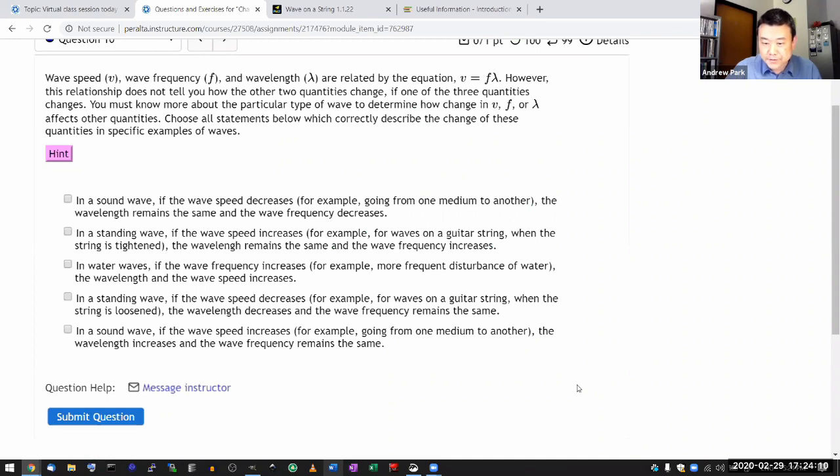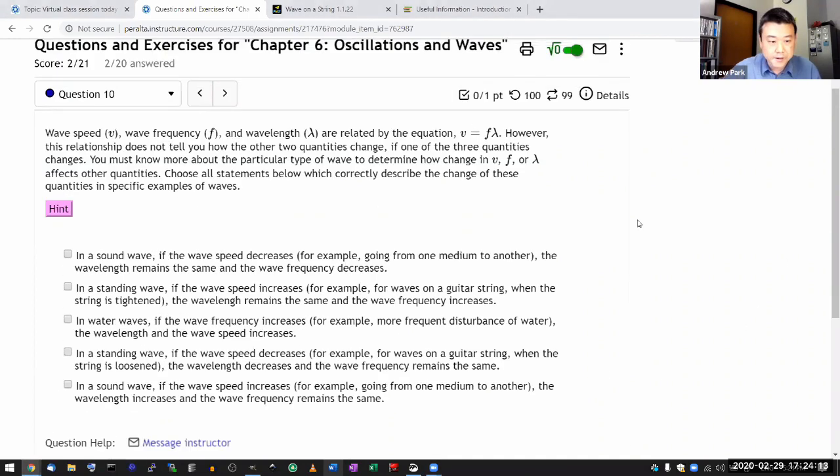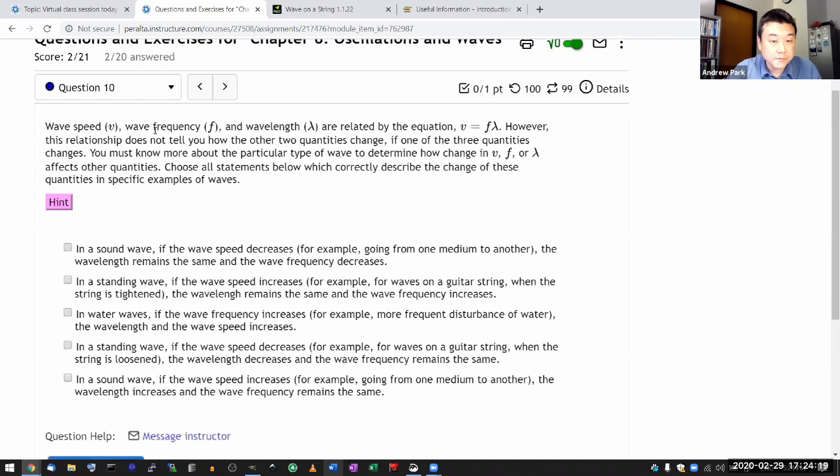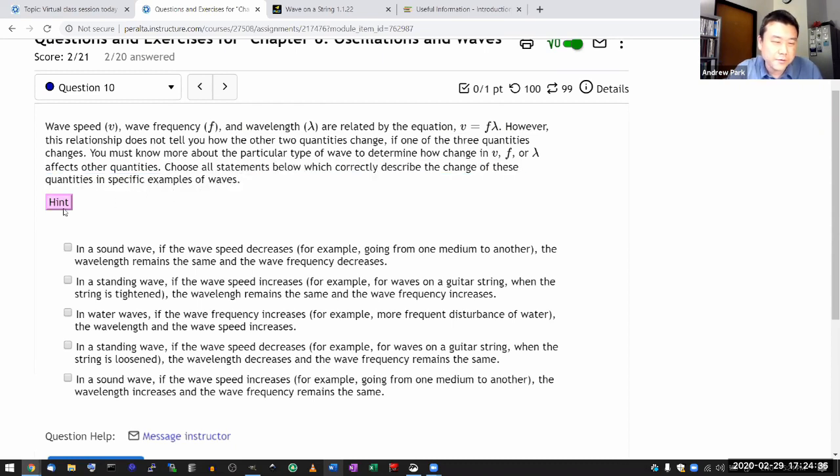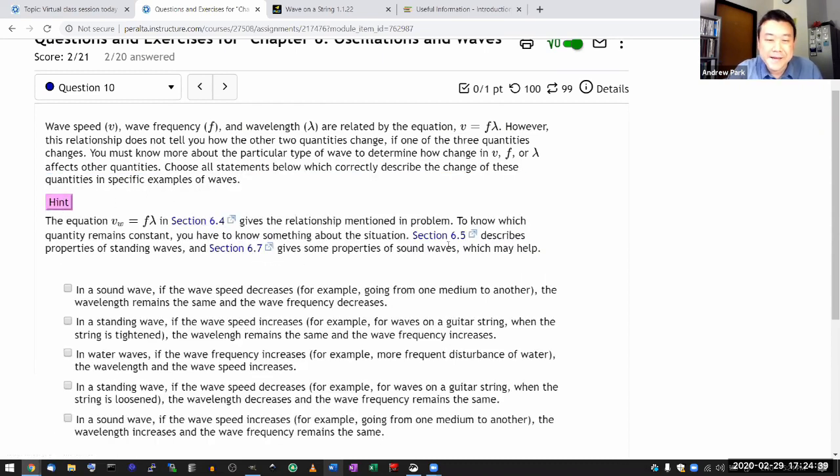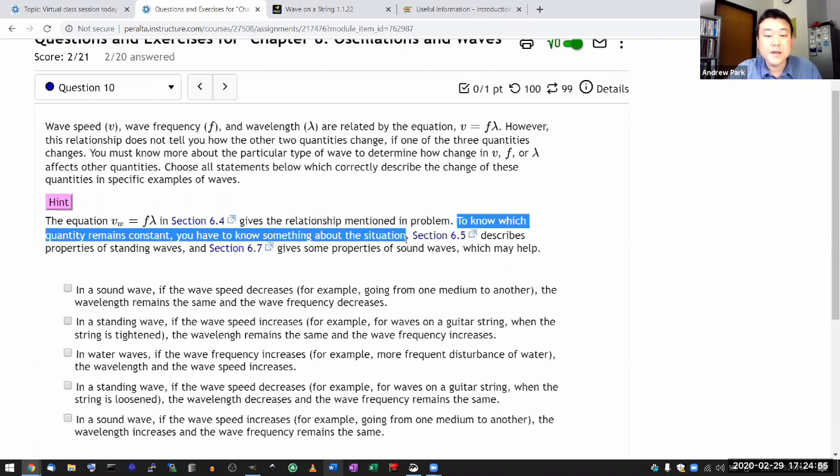Okay, this is another multiple answer question. So I will go over this in detail. And, you know, you can always check to see if a question is a multiple answer question or not by kind of selecting that. Okay, wave speed, the frequency, they are all related. Okay, does not tell you if one of this. Choose all statements below which correctly describes the change of these quantities in specific examples of waves. Yeah, I think this is one of those where you actually have to read the section. Yeah, that's why I hint to point links you out to these different scenarios. So yeah, to know which quantity remains constant, you have to know something about the situation.